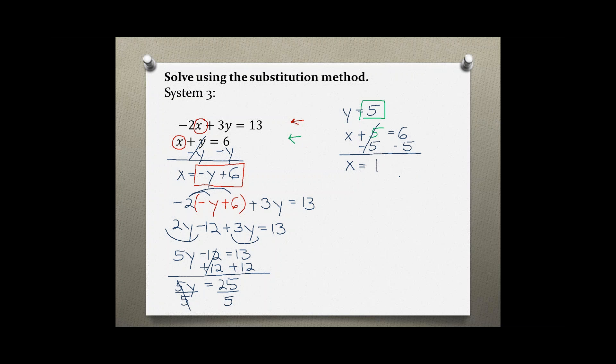So the point that both of these lines intersect is 1 comma 5. If you visualize this, both of these lines cross somewhere, and that would be the one solution at the point (1, 5).